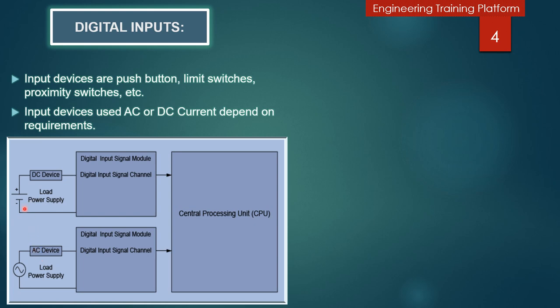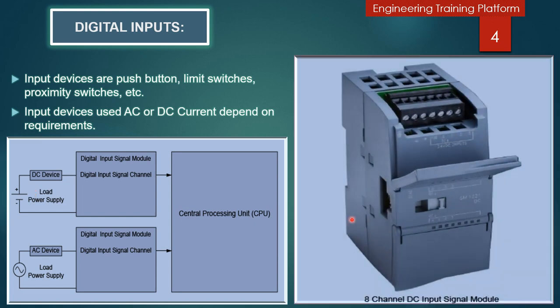Whenever we are going to connect the DC supply source, we should be careful about the current flow direction. If the specification says positive connecting with the DC device, then we go by that. In the next slide I will show you the sinking and sourcing connection — I hope it will be more clear for you.